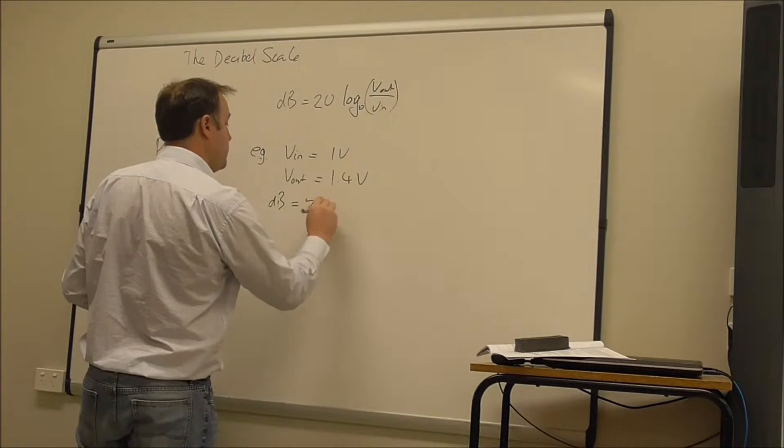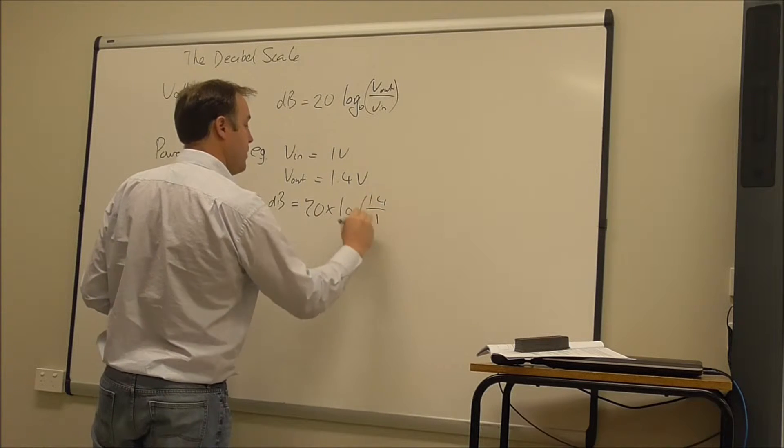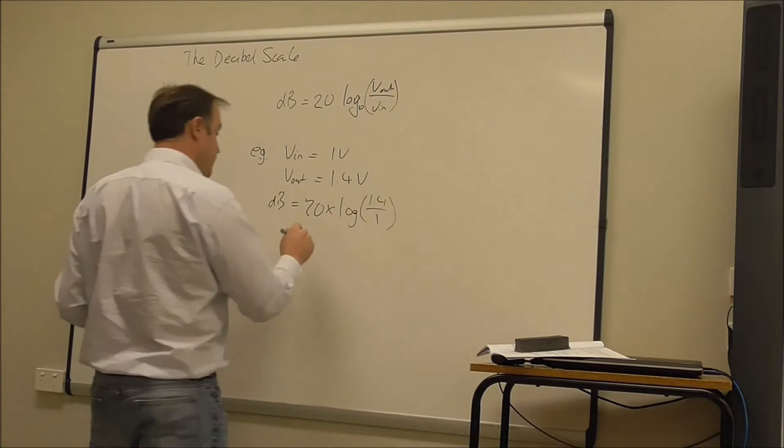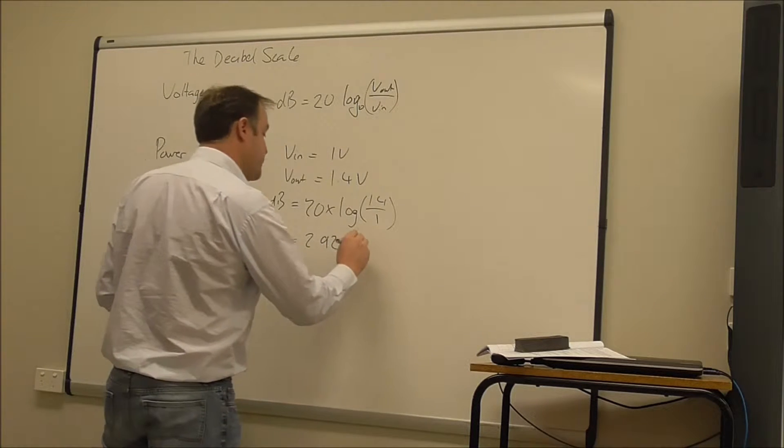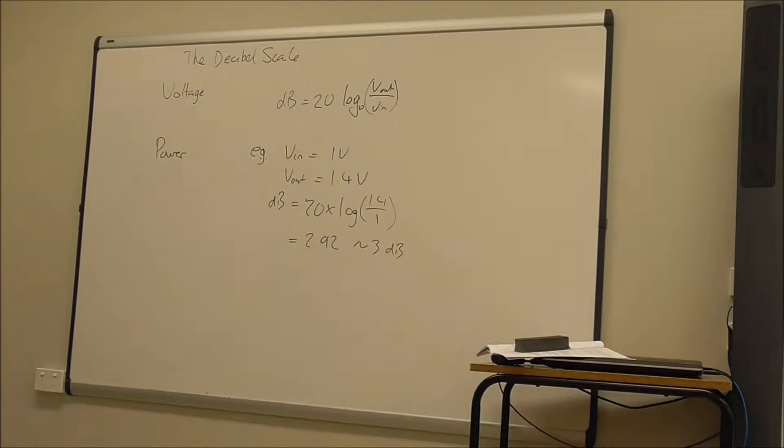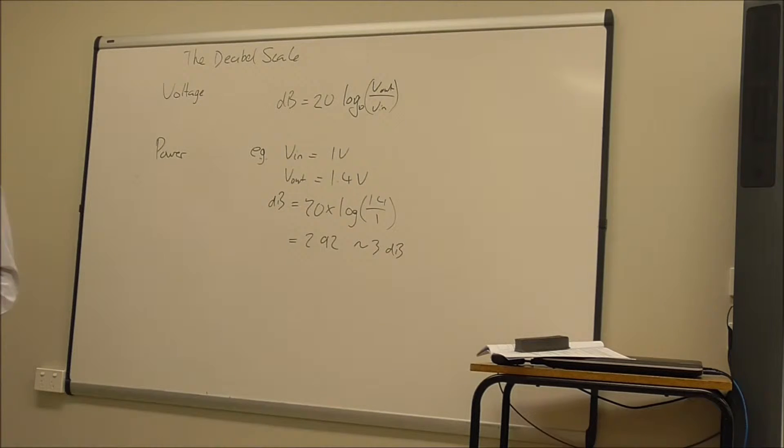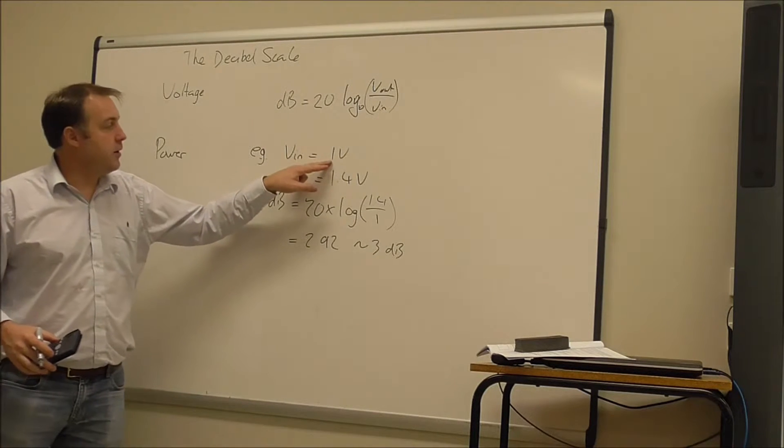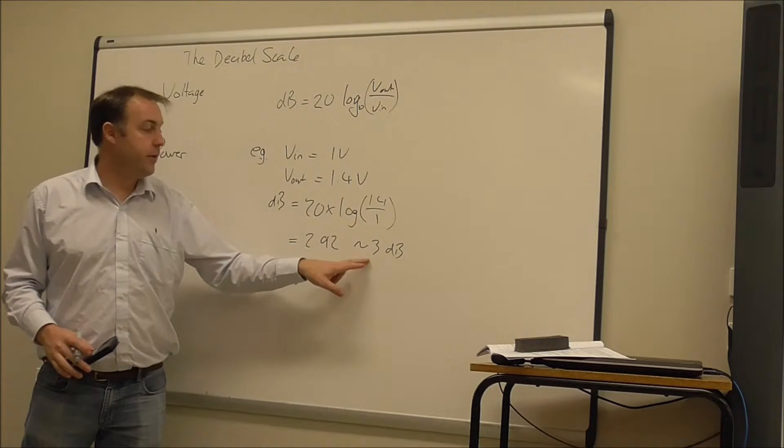So it's 20 times log 1.4 and 1, 2.92. So I'm going to say approximately 3. So if I had a voltage gain of 1.4, so the input was 1 and the output was 1.4 times that, then the gain is going to be positive 3 dB.